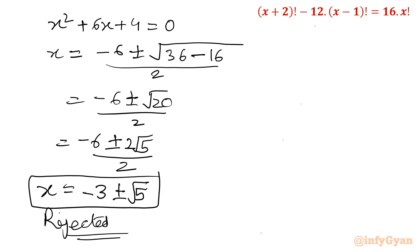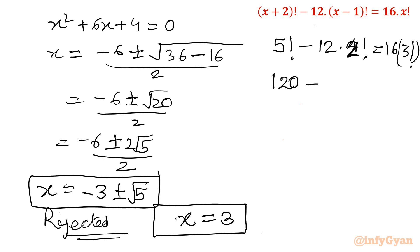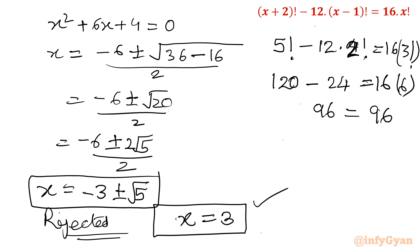Let us verify the solution x=3 in the original equation. Substituting: (3+2)! - 12·(3-1)! = 16·3!, which is 5! - 12·2! = 16·3!. Computing: 120 - 12×2 = 120 - 24 = 96, and 16×6 = 96. Since LHS = RHS = 96, x=3 is confirmed as the true and correct solution.